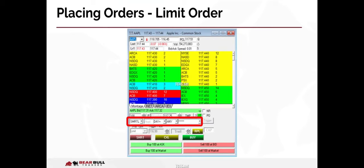Another type of order is a limit order. This is an order to purchase or sell a stock at a specified price or better. For buy limit orders, the order will be executed only at the limit price or lower. For sell orders, the order will be executed only at the limit price or higher. To place a limit order, make sure a limit order route has been chosen and then specify the limit order price in the price field. Then click buy or short according to whether you want to buy or sell the stock.